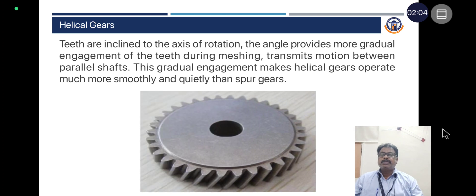Helical gears: Teeth are inclined to the axis of rotation. The angle provides more gradual engagement of the teeth during meshing and transmits motion between parallel shafts. This gradual engagement makes helical gears operate much more smoothly and quietly than spur gears.